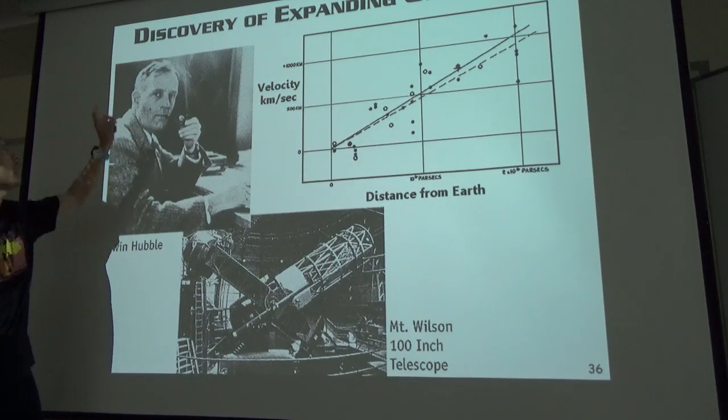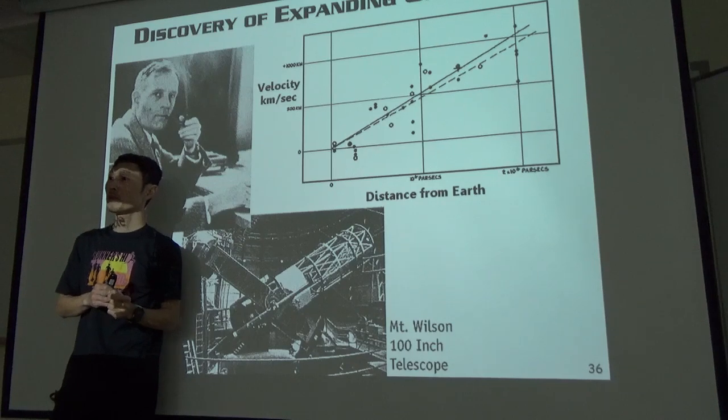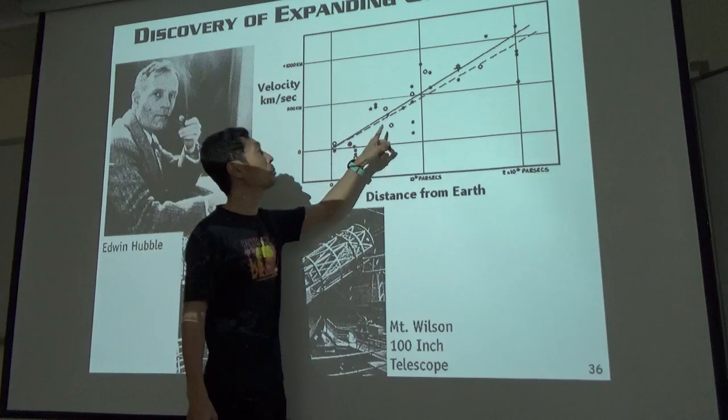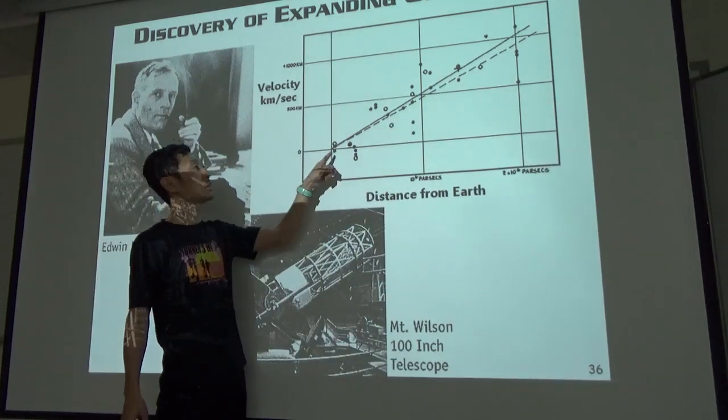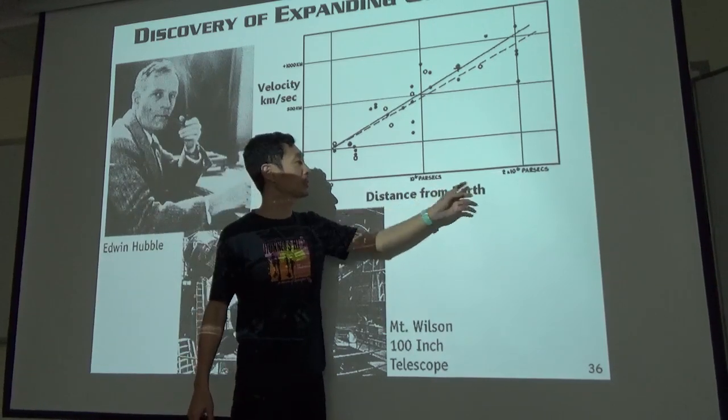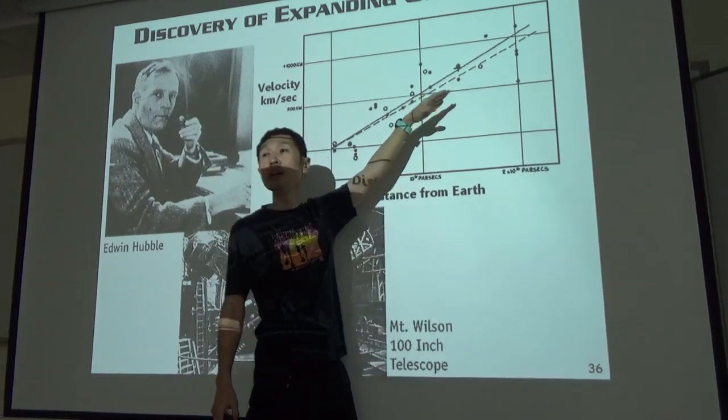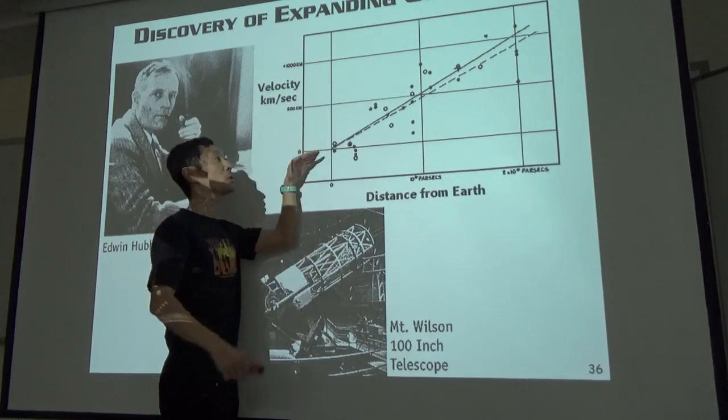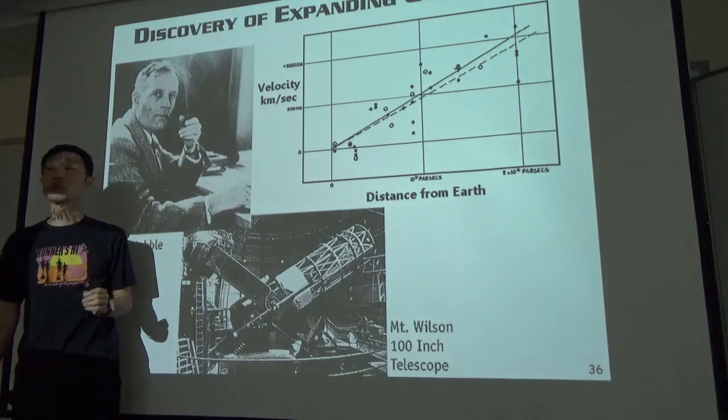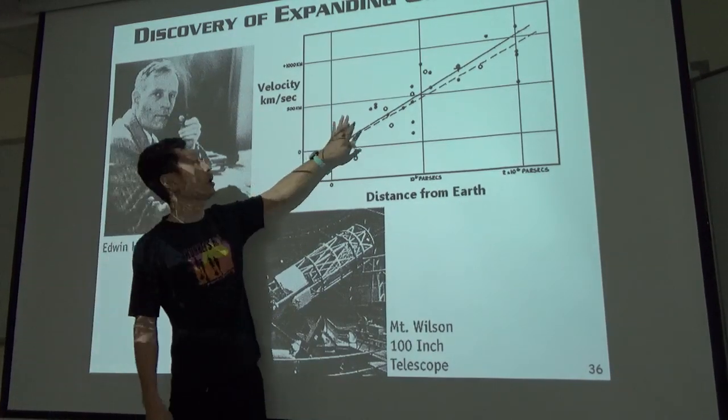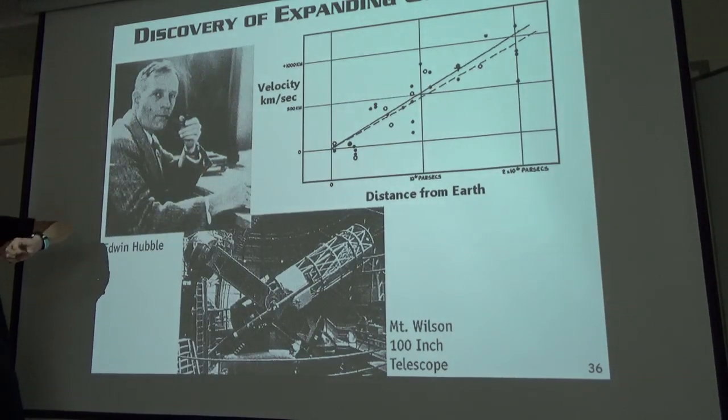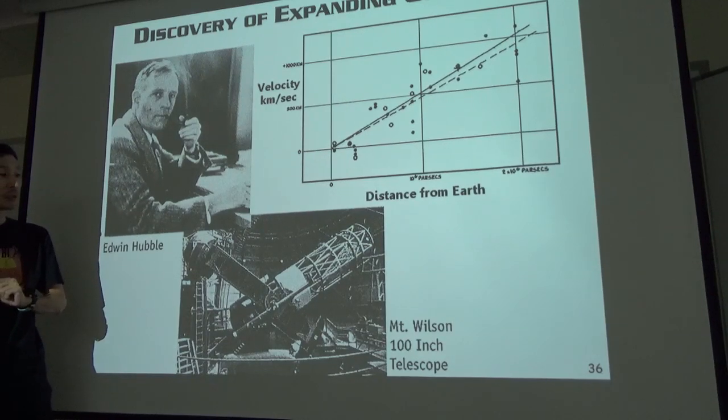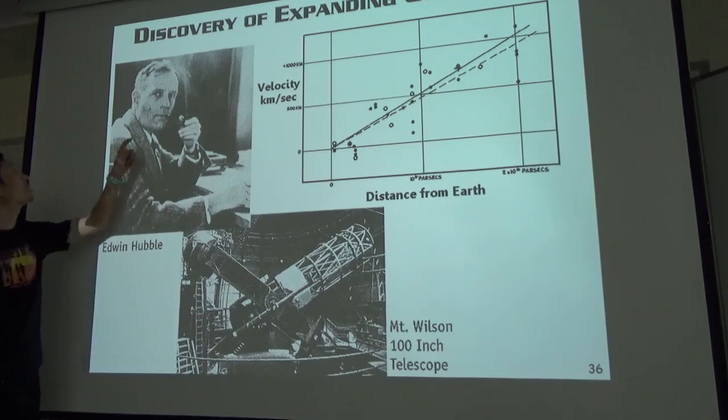But later, in 1929, Edwin Hubble discovered expansion of the universe. So he again used some kind of stars to measure distances to galaxies. And he found, so each point are galaxies, and then galaxies are moving away from us. And then more distant galaxies, here is the distance from us, more distant galaxies are moving faster away from us. More distant galaxies are faster. This is something we call Hubble's law, and then this is the evidence that the universe is expanding. By the way, this is the Mount Wilson's 100 inch telescope that Hubble used. It's kind of big, 100 inch, so it's like 2.5 meter. And this is Edwin Hubble.